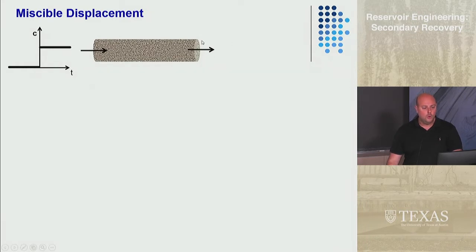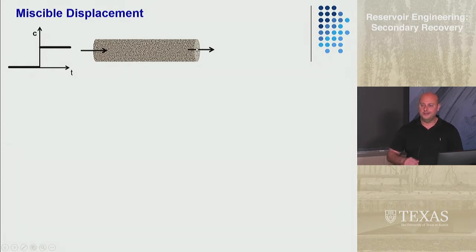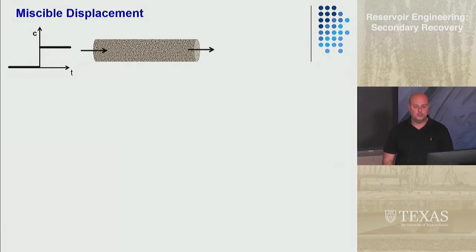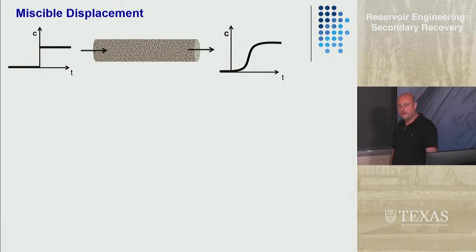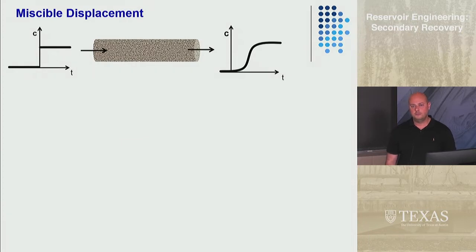The question is: what does the exit concentration look like? If the initial concentration was zero, it's not surprising that initially you're going to produce whatever that initial value is, because what you're injecting doesn't affect the outlet until it gets there. But once it does get there, it doesn't have a sharp step change like at the entrance — it's more of a gradual increase. That's because some particles reach the exit faster than others, and that's what we call dispersion.